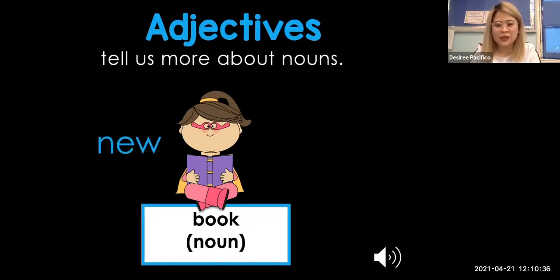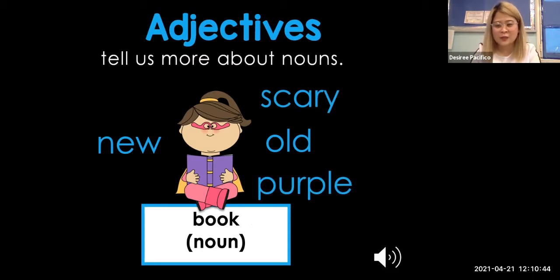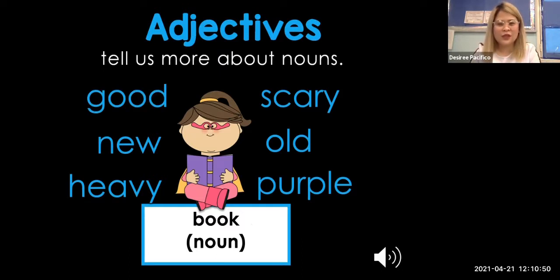Here we have another noun — the word book. The book can be new, it can be old, it can be scary, its color is purple, it is a heavy book, and it is a good book. So all of those are adjectives — they tell what kind of noun our book is.